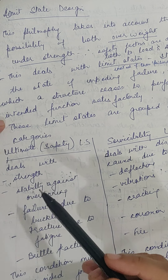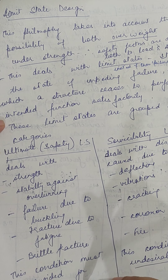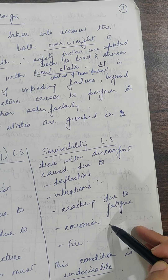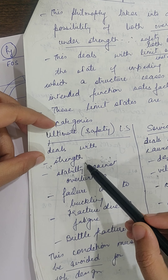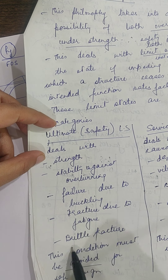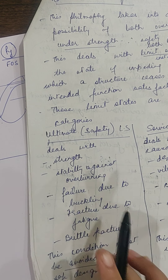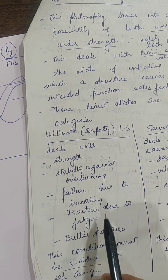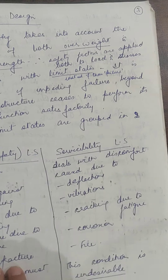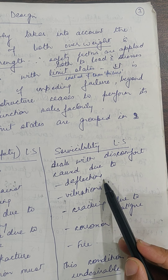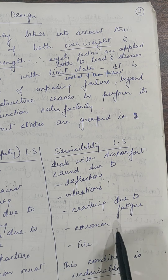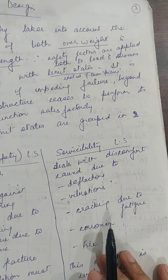Ultimate limit states must be followed; otherwise the structure will collapse. Serviceability limit states are desirable — if not followed they cause discomfort. Ultimate limit states relate to strength, stability against overturning, failure due to buckling, fracture due to fatigue, and brittle fracture — overturning or column buckling leads to total collapse. Serviceability limit states require that deflections, vibrations, fatigue cracking, and corrosion remain within limits.